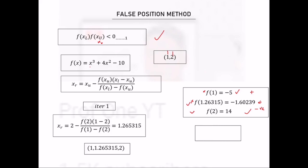Our new interval is 1.26315 to 2. For iteration 2, we apply the same formula to find the new xr, substitute values into the function, and multiply to check whether the condition is satisfied. When the product is less than zero, the root is within that interval. Depending on the question, you may be asked to do four or five iterations. This is how we use the False Position Method to find the root of an equation using numerical methods.